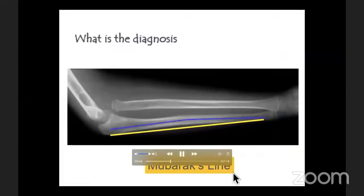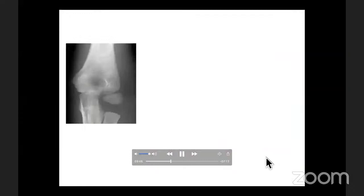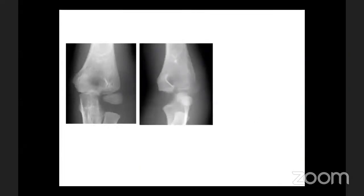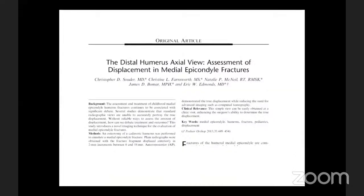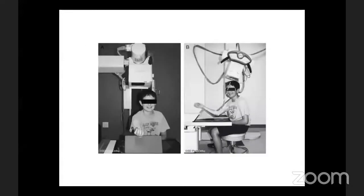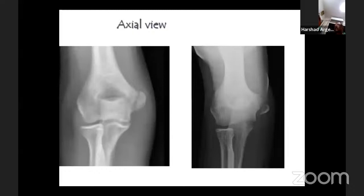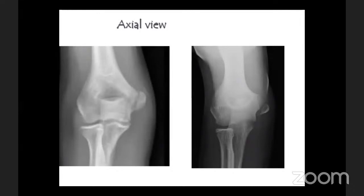That gives you a diagnosis of Monteggia lesion. For occult fractures, an internal rotation view of the elbow as described by Dr. Song is very helpful. Internal rotation view and external rotation view help when you are in confusion. For medial epicondyle fracture, the axial view is taken with elbow in flexion.